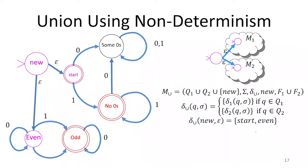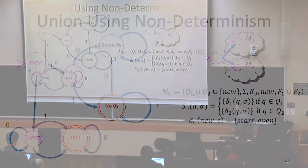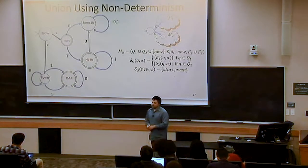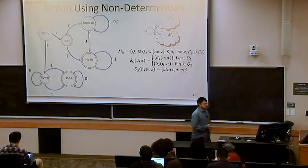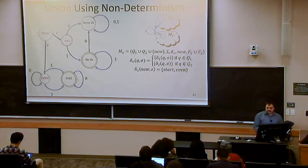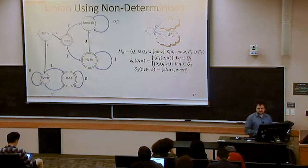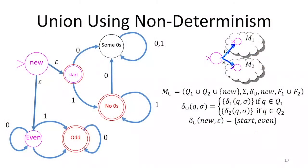To express union using non-determinism in general terms: if I have some machine M1 and some machine M2, and I want a new machine that does the union of the languages of M1 and M2, I introduce a new start state with epsilon transitions to the previous start states. This cloud represents one automaton, this other cloud represents a different automaton. I introduce a new start state, draw input-free transitions from it to the old start states, and the old ones are no longer start states.